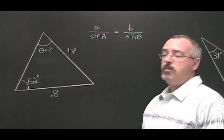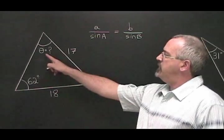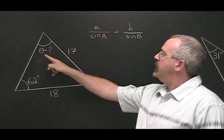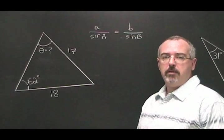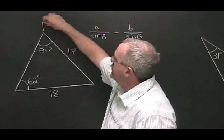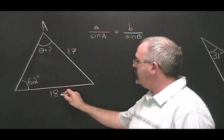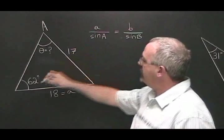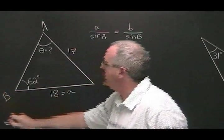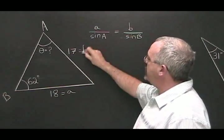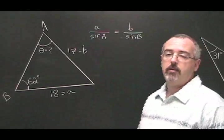In example 2, we want to know the measure of this angle theta. Applying our rules for labeling our triangles, let's call this angle A. That means this is side A. If we call this angle B, this must be side B. And we fill in our formula like this.